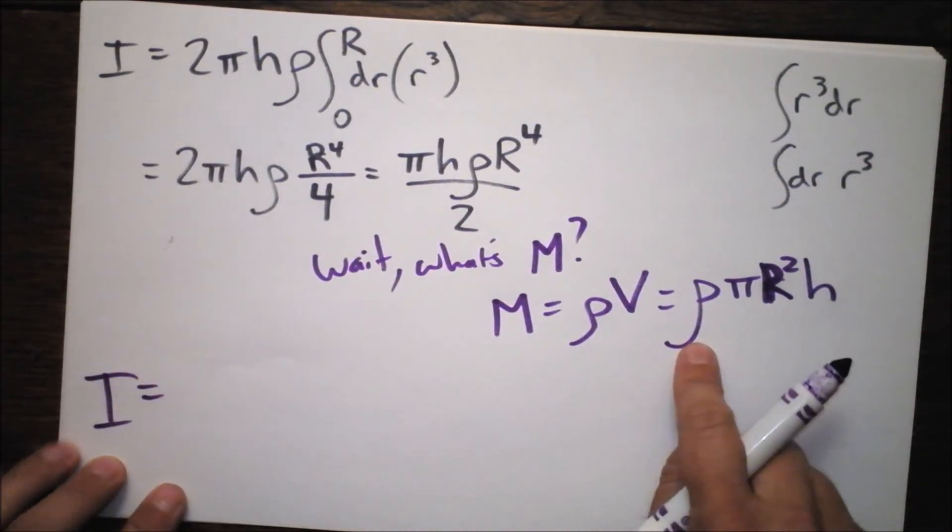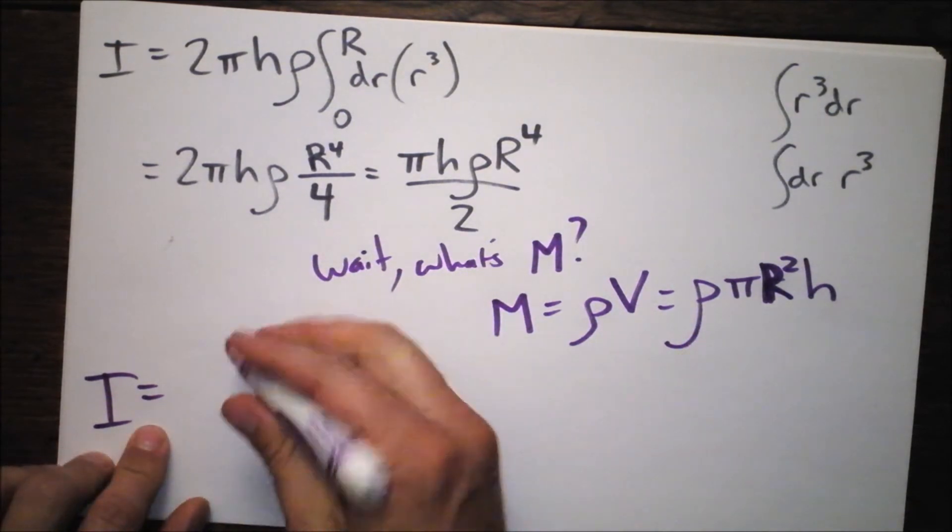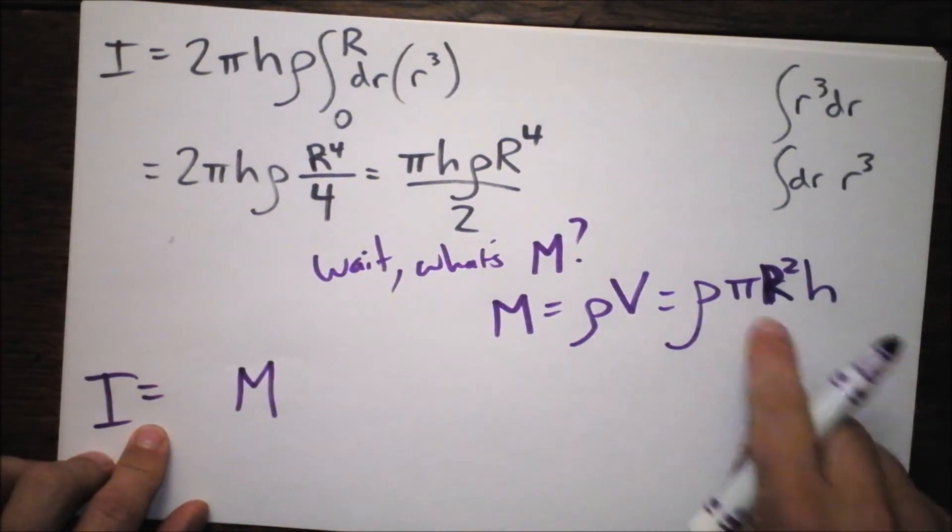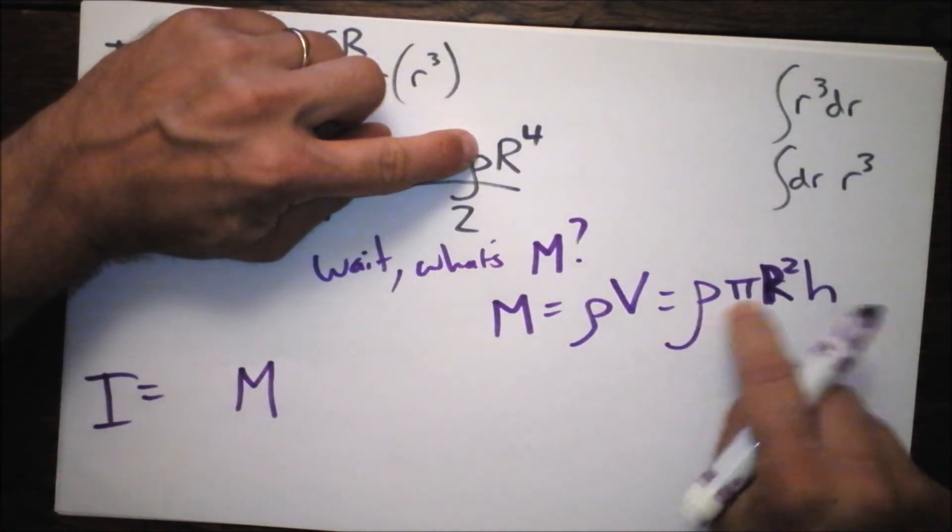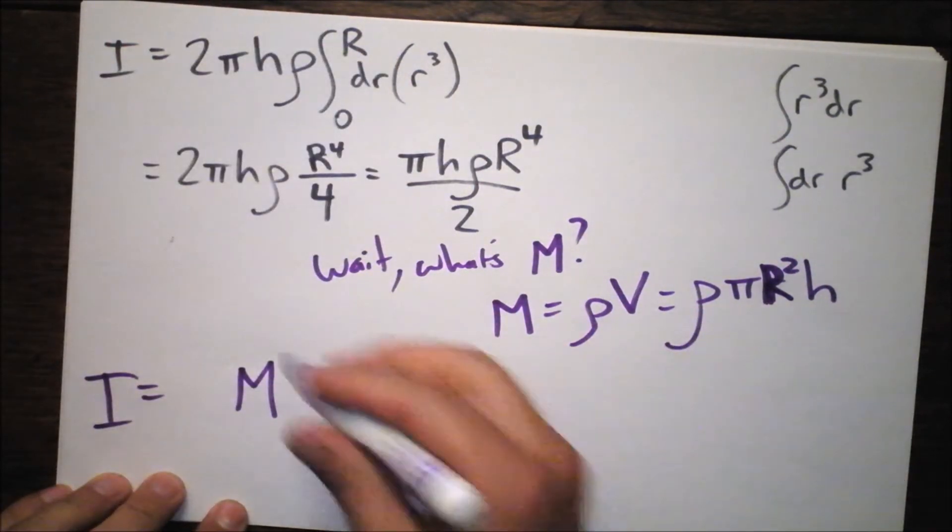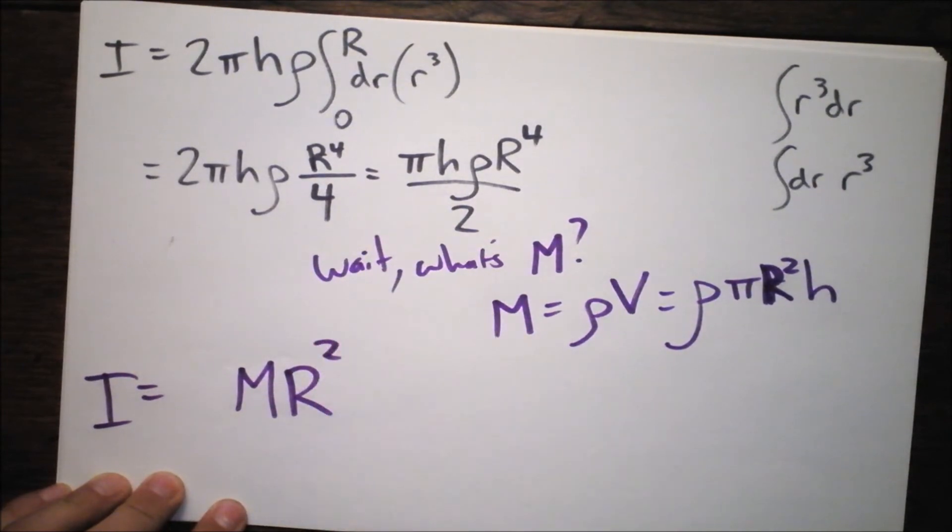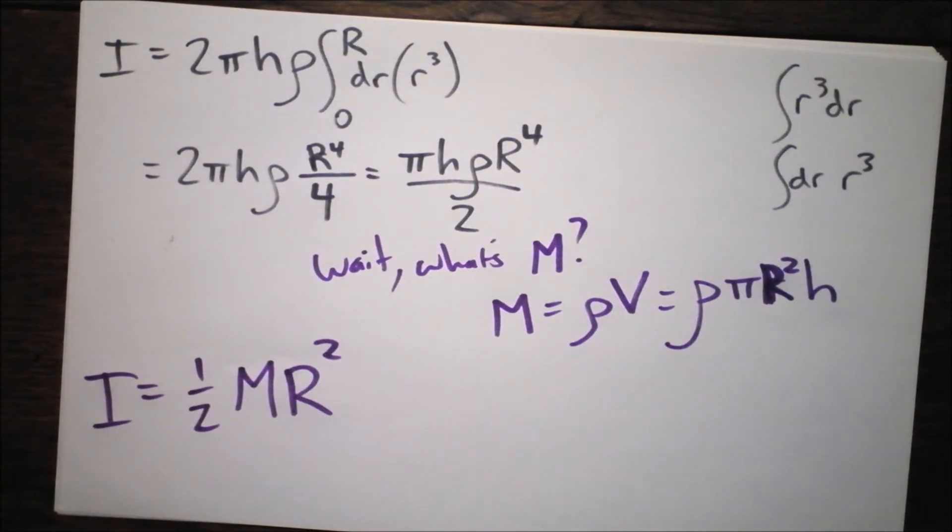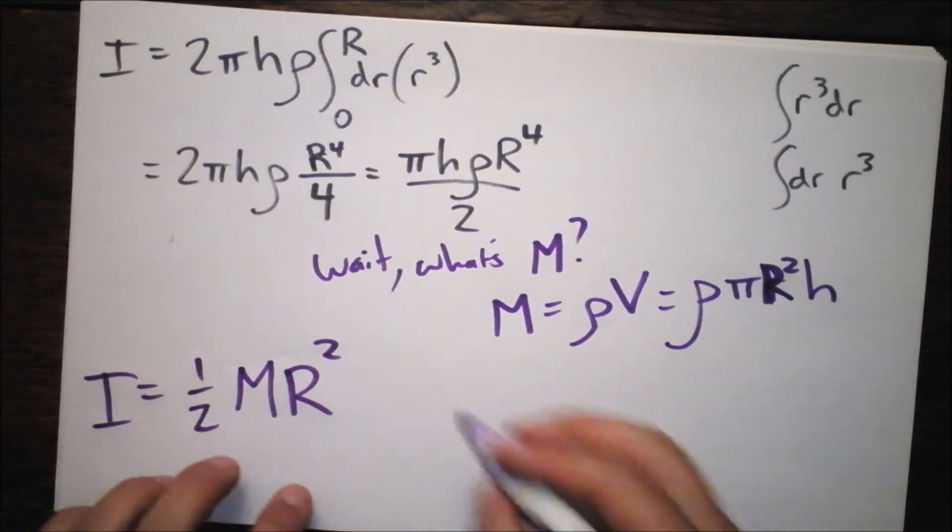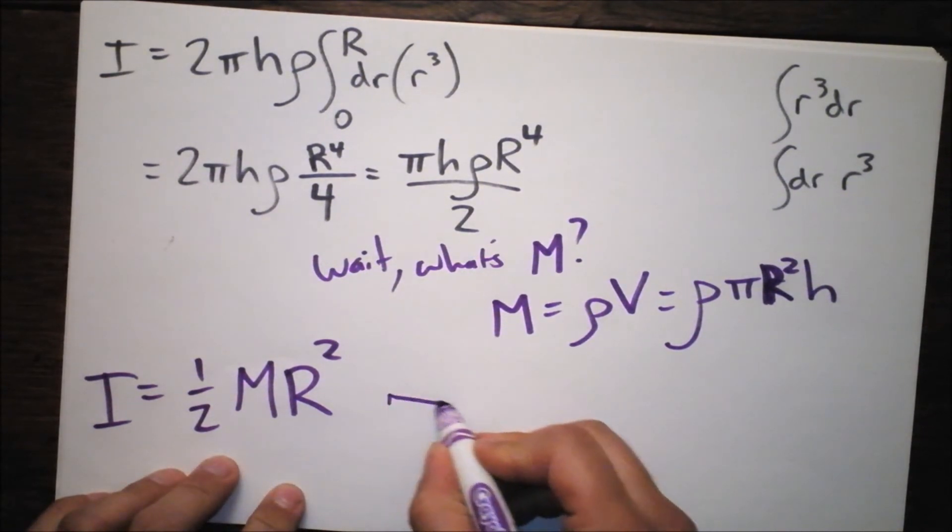We reduce to I equals, so I'm factoring out a capital M. Here's the capital M. It takes care of a pi. It takes care of an H. It takes care of a rho, and it takes care of two of my R's. So, I get MR squared, as you were hoping, and there's still a two sitting out. What the heck? This is exactly the result that we got for an infinitely thin platter.